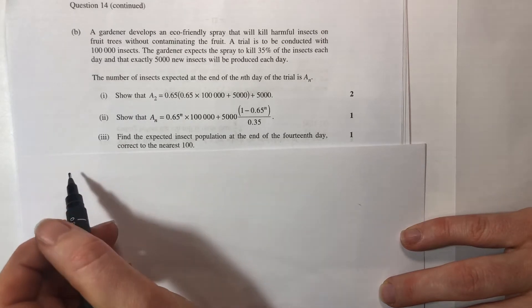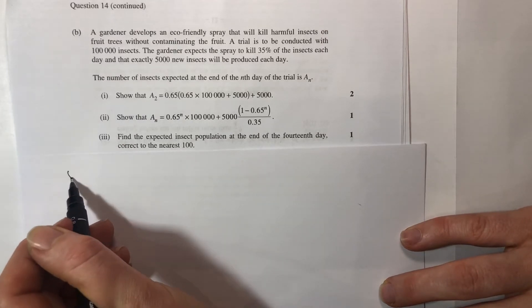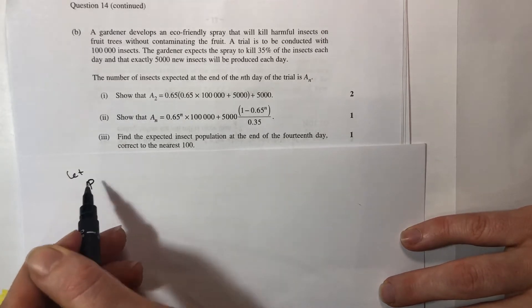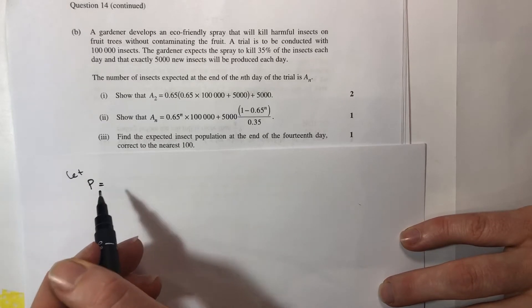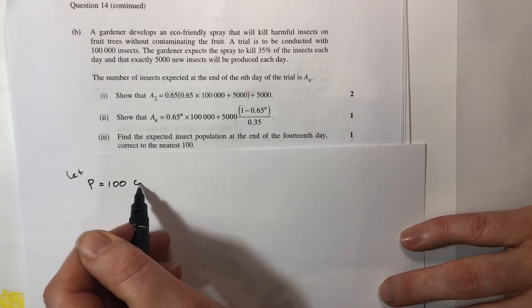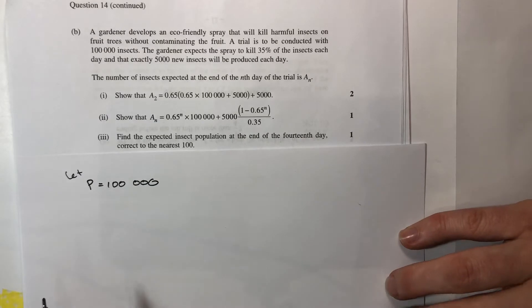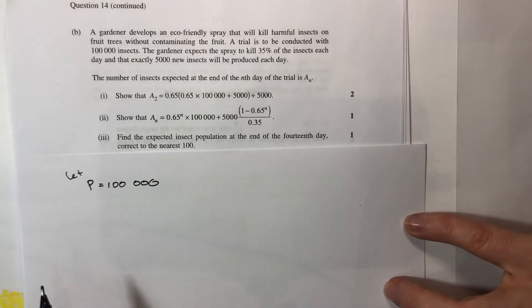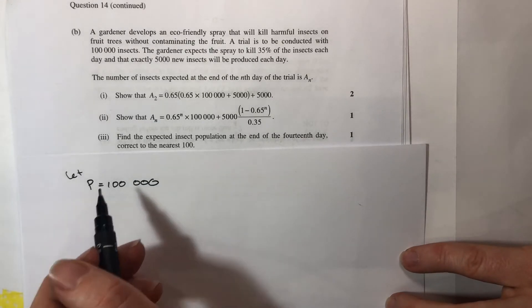When we did it with loans we would always talk about the initial value, so I'm just going to create some letters for things so that it's easier to see what I'm writing. My initial value that I'm starting with, like an initial investment or loan, is 100,000. It doesn't change or get repeated so I'm going to call that P.